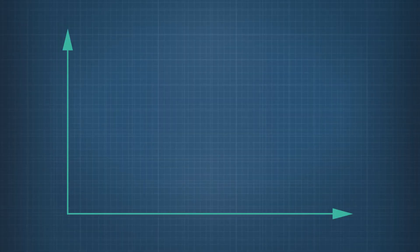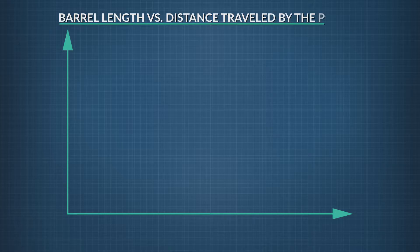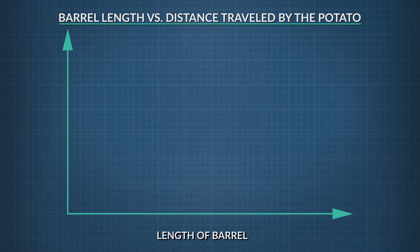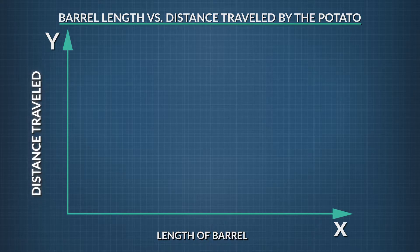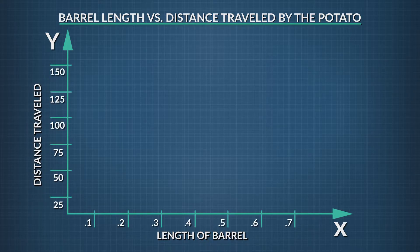Any good graph has to have a clear descriptive title. Let's call ours 'Barrel Length Versus Distance Traveled by the Potato.' Those are our variables. The independent variable goes on the x-axis and the dependent variable goes on the y-axis. So what goes on the x-axis? Our independent variable — the length of the barrel. And what goes on our y-axis? The dependent variable, or the distance traveled. Make sure the numbers are evenly spaced along the axis, and write out the variables including units in parentheses.